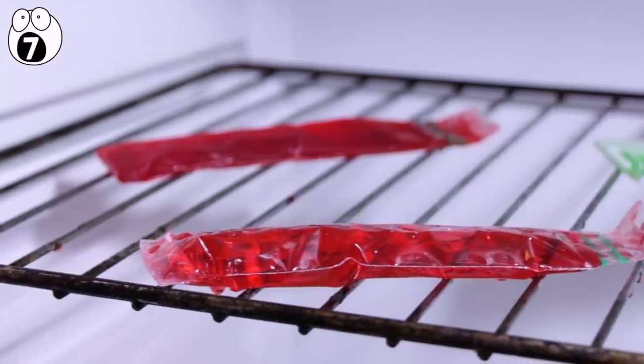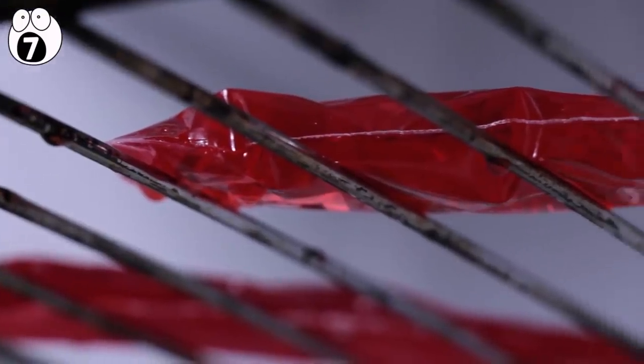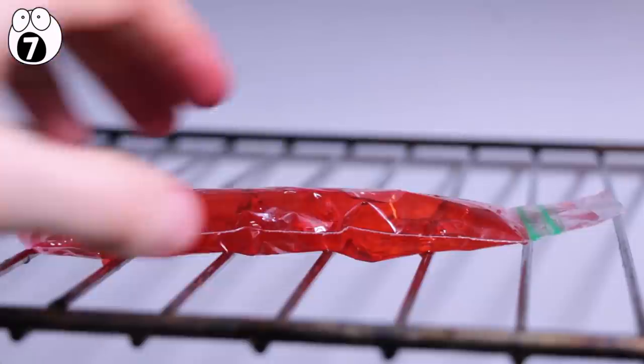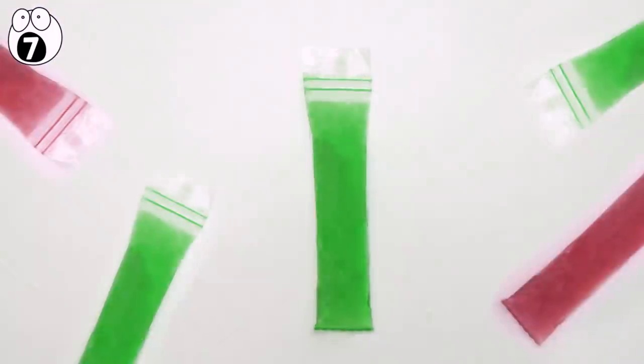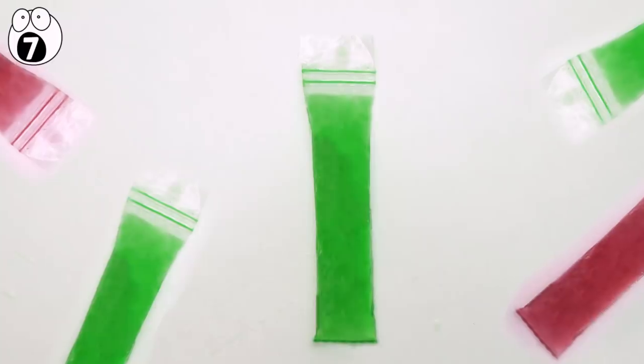Instead of storing your ice pops on their side, which creates air pockets and uneven grooves from the freezer, try storing them upright in the freezer. You can utilize every inch of freezer space by clipping the ice pops underneath the shelves for a guaranteed clean cut every time.